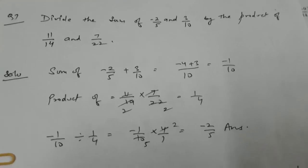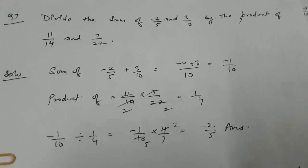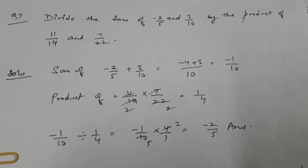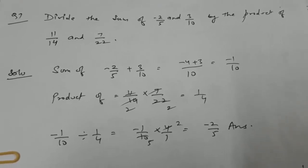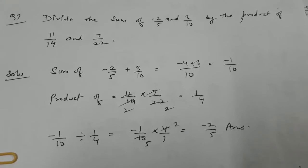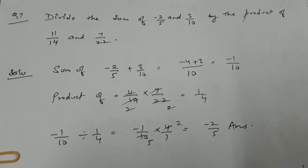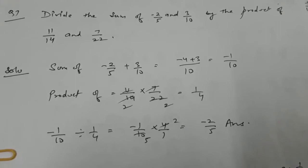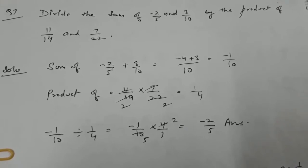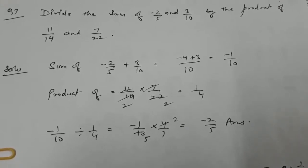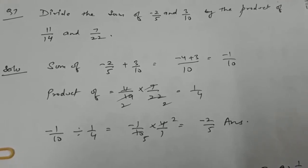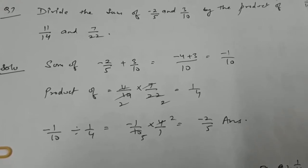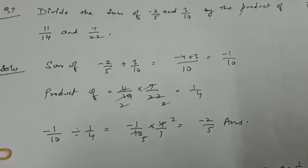In question number 7, we have to divide the sum of minus 2 by 5 and 3 by 10, by the product of 11 by 14 and 7 by 22. First of all we will find out the sum of minus 2 by 5 plus 3 by 10, that is after taking the LCM and dealing with the numerators.